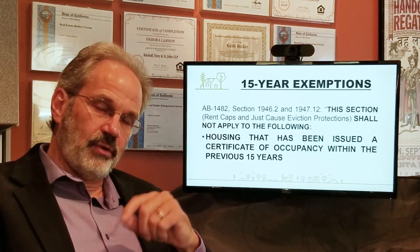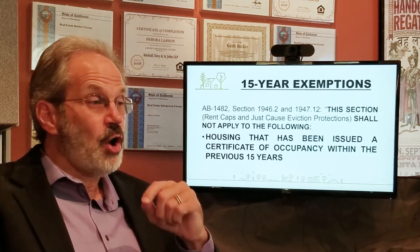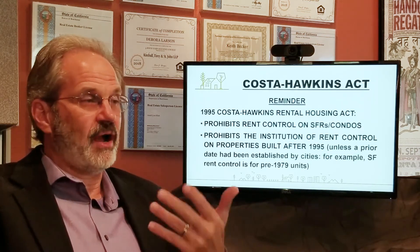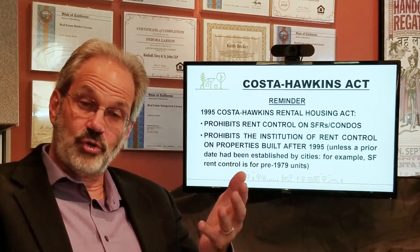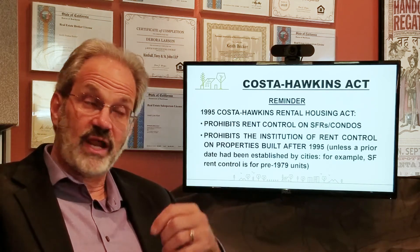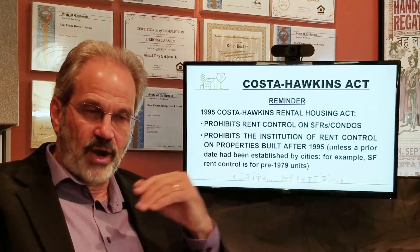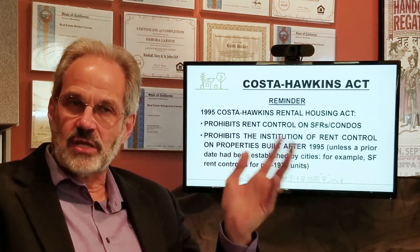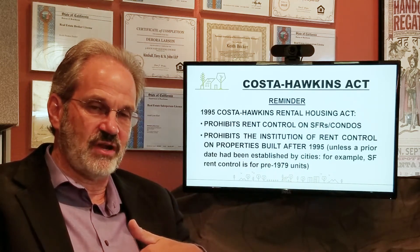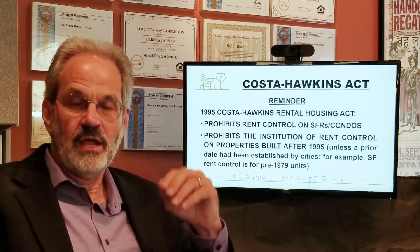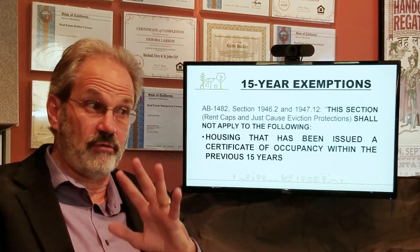The big exemption that would apply to many small investors is housing that has been issued a certificate of occupancy within the previous 15 years. As a recap, Costa-Hawkins has been the law since 1995. Costa-Hawkins prevents the institution of rent control on single-family residences and condos, and also prohibits rent control on properties built after 1995. AB 1482 changes that, because it states that housing issued a certificate of occupancy within the prior 15 years is exempt.